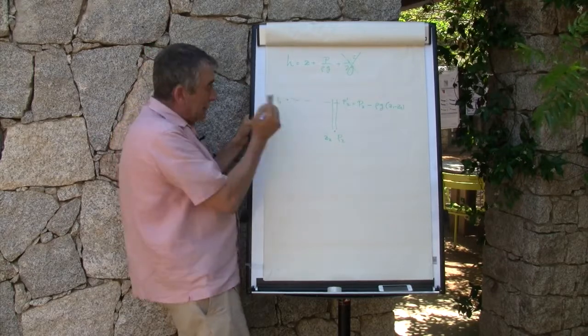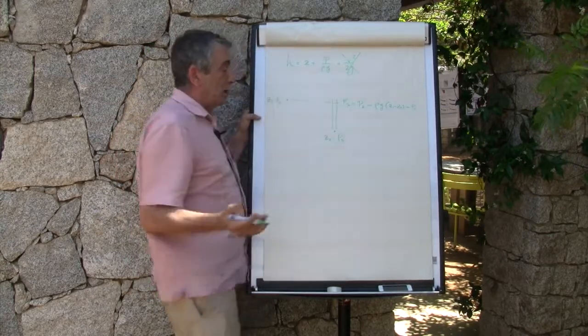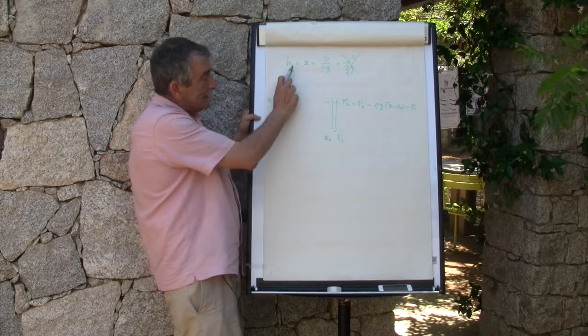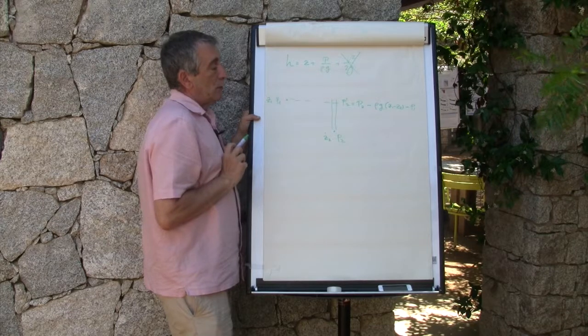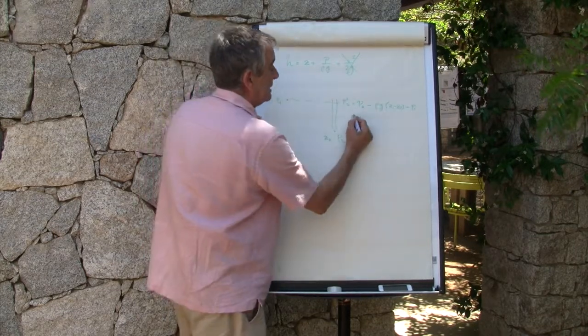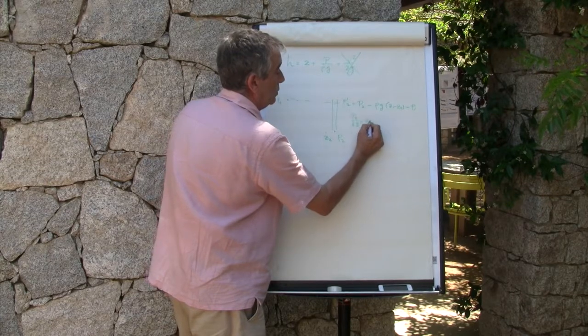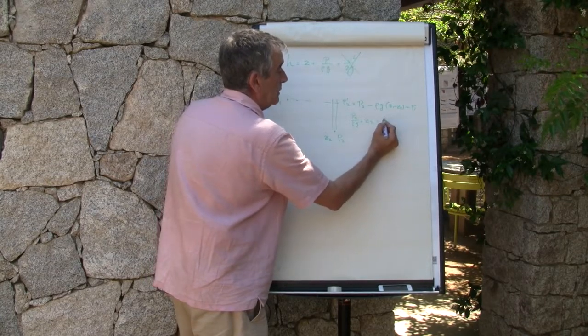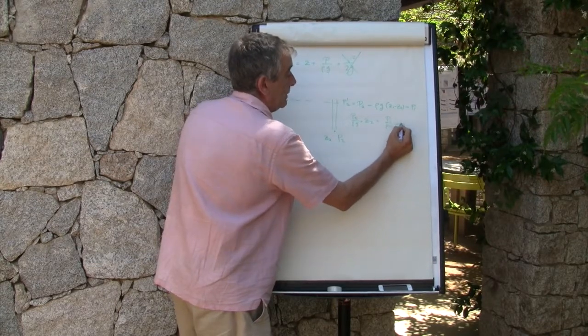So, if I divide, I say, well, if p prime 2 is equal to p1, then water will not move. And basically, this tells me, leads me to this equation, right? Because, basically, this is telling me that p2 divided by rho g plus z2 is equal to p1 divided by rho g plus z1.